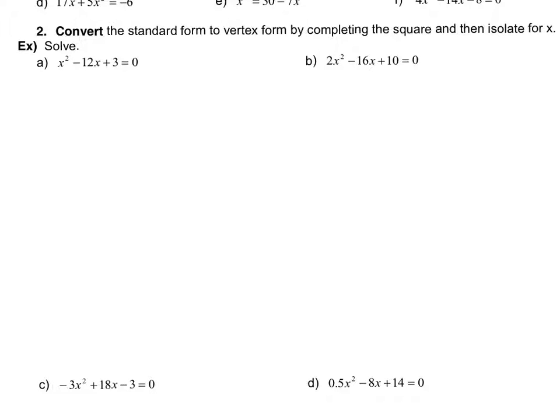We're going to complete the square to write the first one in vertex form. My a value is just 1 here, so I don't have to worry about factoring the a out of the x squared and the x term. I'm going to go directly into the second step, which is taking half of the b term. Half of 12 would be 6, and then I'm going to square that. We add that value, so 6 squared is 36. We add 36 and we subtract 36, so the net result is 0, and we still have the plus 3 from the original equation.